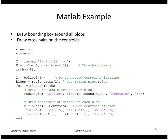We'll then draw the crosshair centered at the centroid. We get the centroid c, which is a two-element vector where the first element is the x coordinate and the second element is the y coordinate. Then we draw a horizontal and a vertical line to form the crosshair.